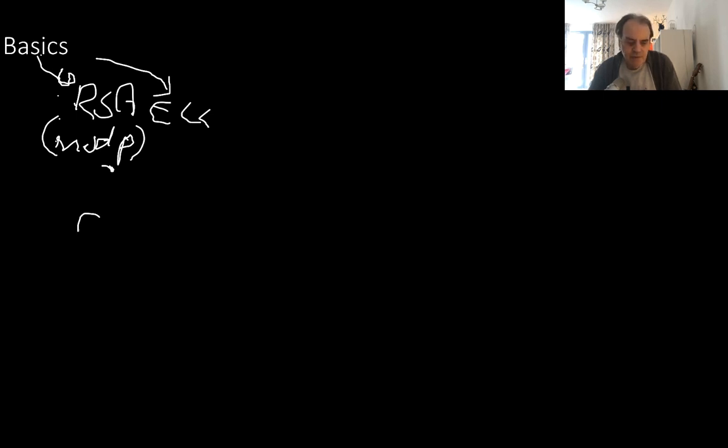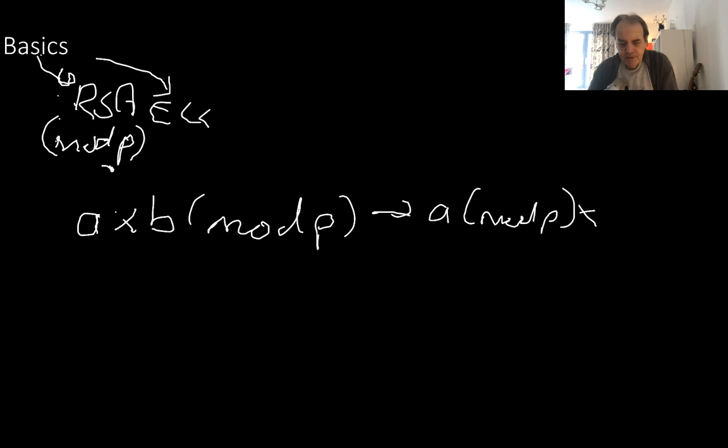Well, the good thing about prime numbers is that we can still perform our mathematical operations by performing a mod p. So that is the same as: if we take a mod p times a mod p, it's the same as a times b mod p.